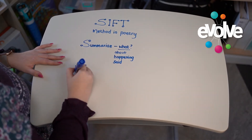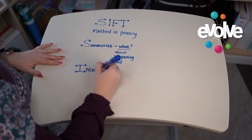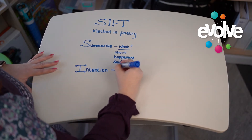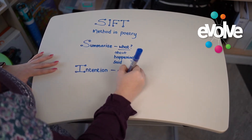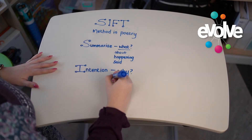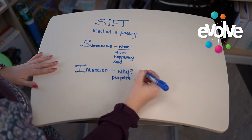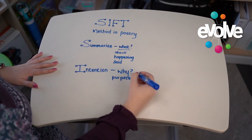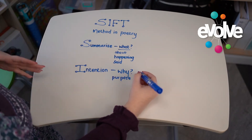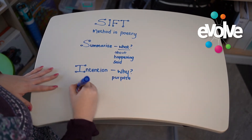The I stands for intention, which is very important when studying any form of literature. The intention tells us the why — why was the poem written? We ask: what is the purpose of the poem? Is it there to communicate something, to highlight something, to show us or elaborate on a specific thing?